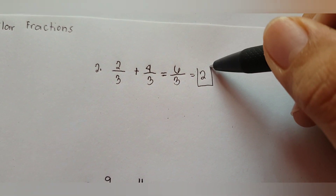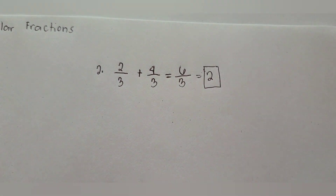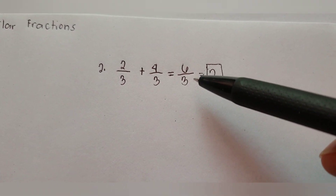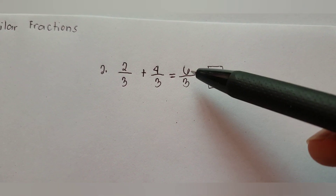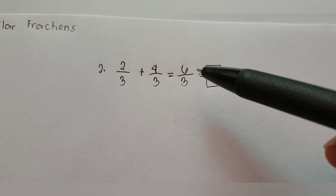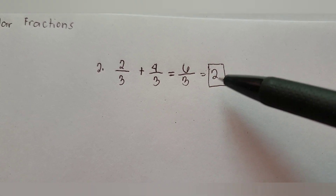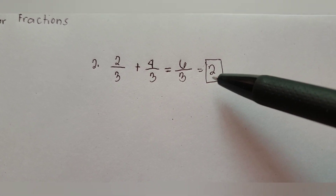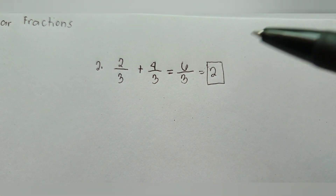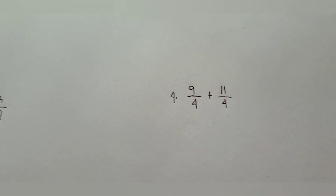In adding similar fractions, you should not stop at the initial result — always check if you can reduce the fraction to its lowest term. That is why the final answer for example two is two.